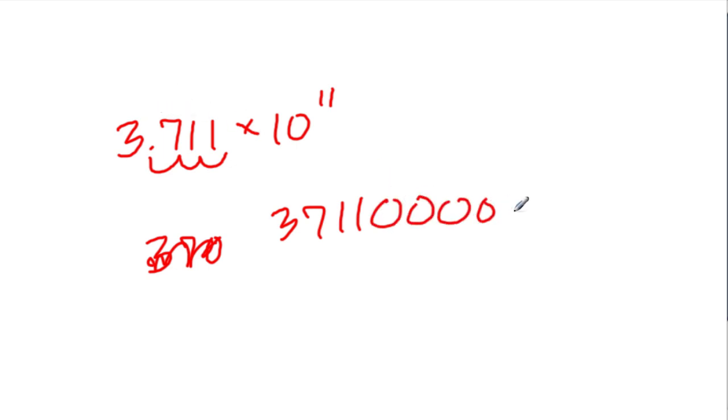So for examples where you have like 3.711 times 10 to the eleventh, well, now I can quickly recognize that there will be eight zeroes because we have 3, 7, 1, 1. The decimal point is going to move 11 times. The first three hops are taken up by these numbers and the rest are zeroes. So we'll have eight zeroes after that. This might save you some time.